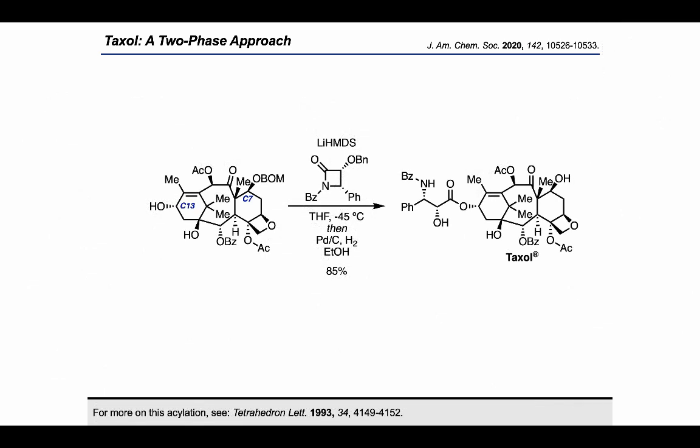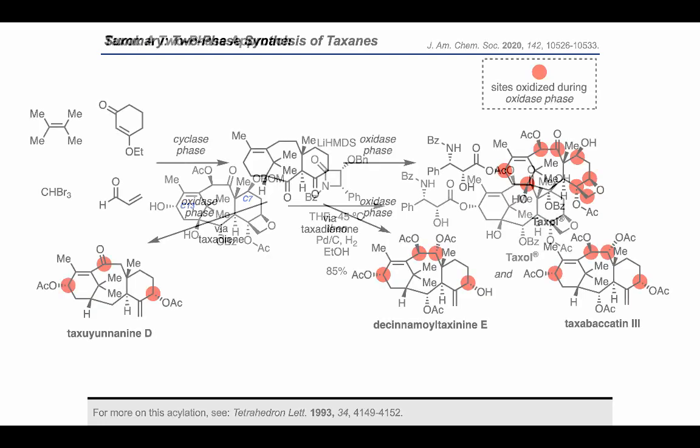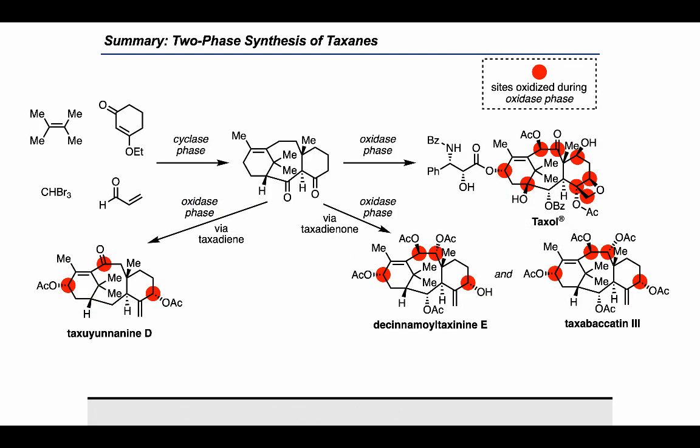Finally, the C13 alcohol was used to open up a beta-lactam shown, and a palladium on carbon hydrogenation removed the PMB group at C7 as well as the benzyl group on the newly installed side chain, thus completing the two-phase synthesis of taxol. In summary, the Baran group developed a route allowing access to a range of cyclized intermediates, including taxadienone and taxadiene. The products of this cyclase phase could be carried on in a number of different directions by deploying selective oxidation reactions to functionalize specific sites and reach increasingly complex targets. The range of taxane targets pursued in this research line lends credibility to this approach and suggests it is a very valuable strategy for the divergent synthesis of complex targets.